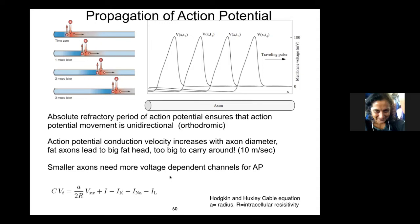Neuronal membranes are quite leaky — permeable to certain ions, but leaky. Compare it to a leaky water hose: the fatter the hose, the less water you waste. Similarly, if you want action potentials to travel down an axon really rapidly, you want most of the sodium ions to flow down the axon rather than go out, requiring very fat axons. But that would make your head enormous. Evolution got around this by having insulation — the insulating layer provided by glia: Schwann cells in the PNS and oligodendrocytes in the CNS.